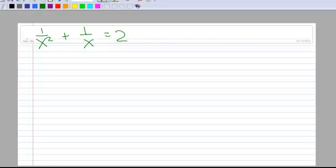All right, here's a second example of solving a rational equation. So I have 1 over x squared plus 1 over x equals 2.